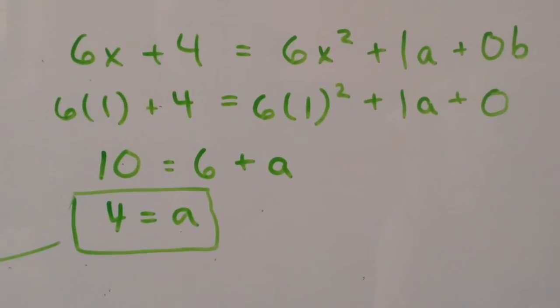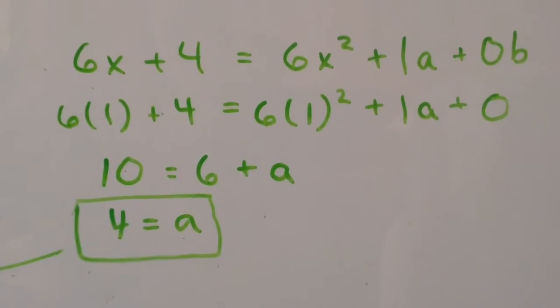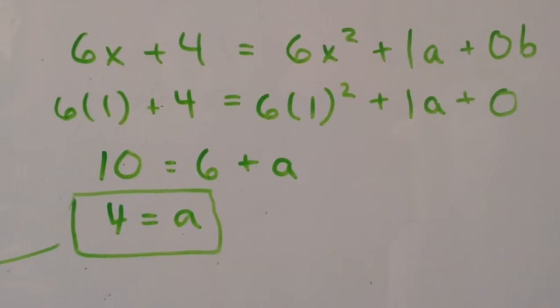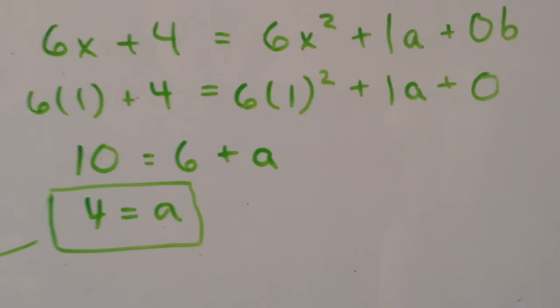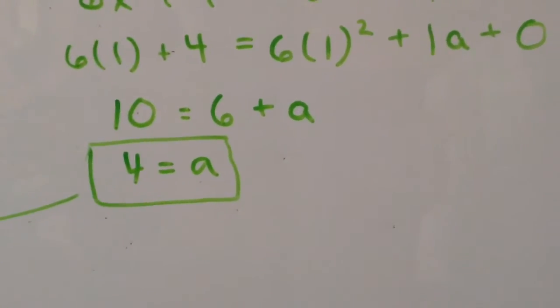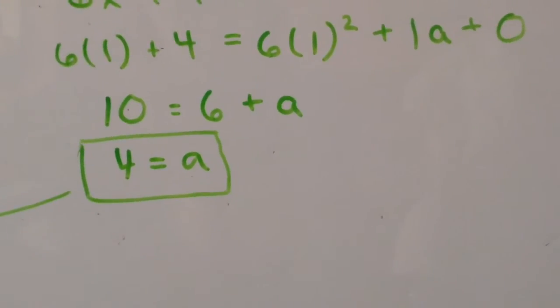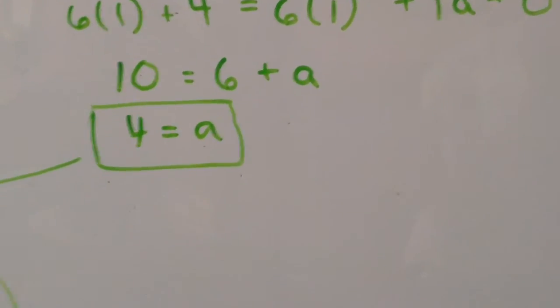And then I plugged in 1 for x, and I found 6 times 1 plus 4 equals 6 times 1 squared plus a. And I simplified that down to 10 equals 6 plus a, and subtracted 6 from both sides to get a equals 4.